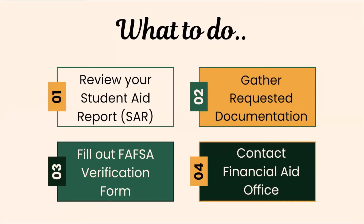If you are selected for verification, the first thing you need to do is review your student aid report. Your student aid report, or SAR, summarizes the information you submitted and your expected family contribution. If you've been selected for verification, the SAR will include a notice alerting you. The school may also send you a letter telling you that you've been picked for verification.